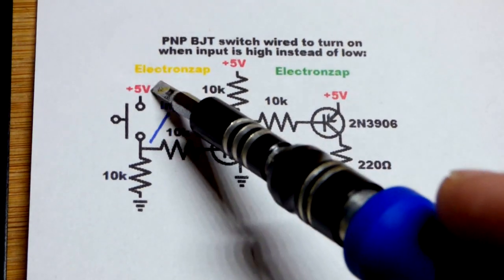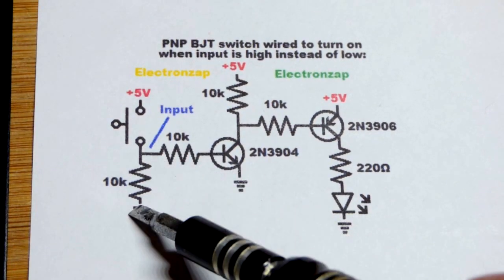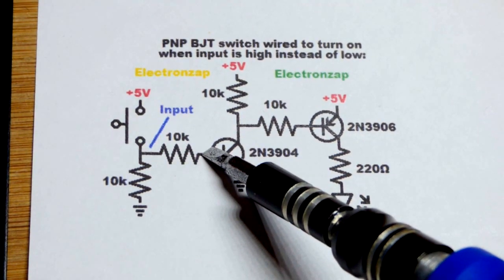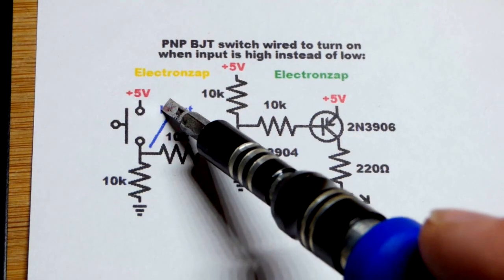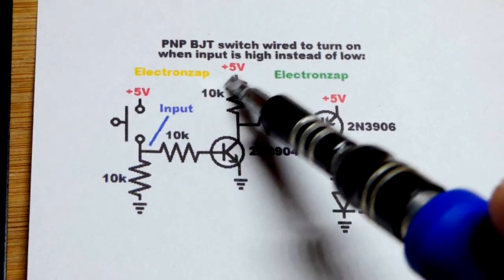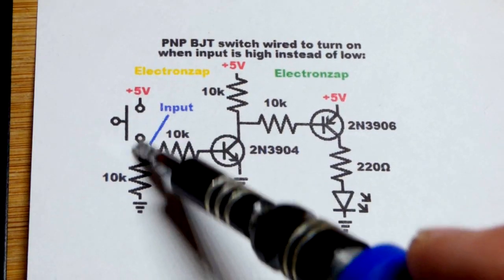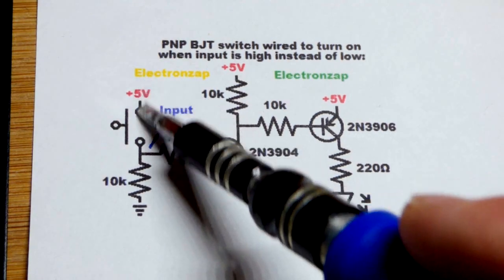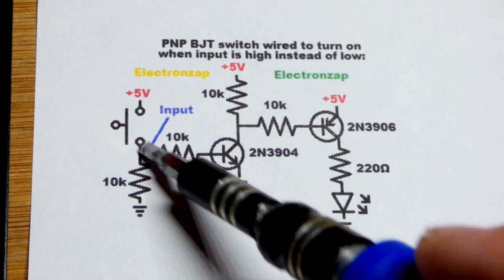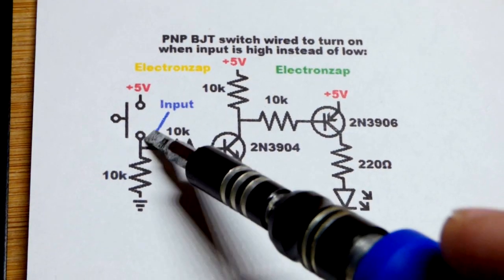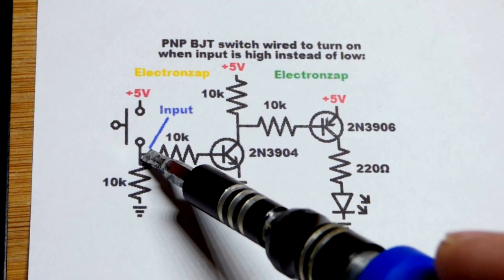So it turns on with a high input. So normally we'll have a low input here. It's going to be held down. That will hold the transistor off, which will hold the PNP bipolar junction transistor off. If we close the switch, then we'll have a direct connection to 5 volts right there.